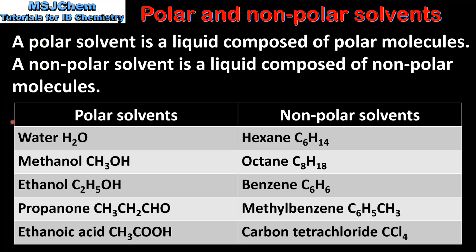In this table we have some examples of polar solvents on the left and non-polar solvents on the right. Polar solvents include water, methanol, ethanol, propanone, and ethanoic acid. Non-polar solvents include hexane, octane, benzene, methylbenzene, and carbon tetrachloride.